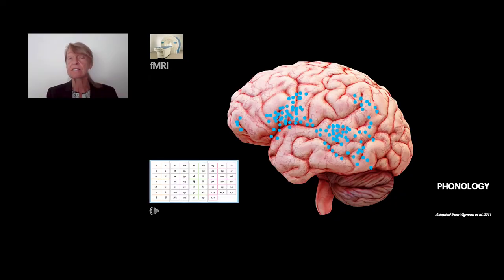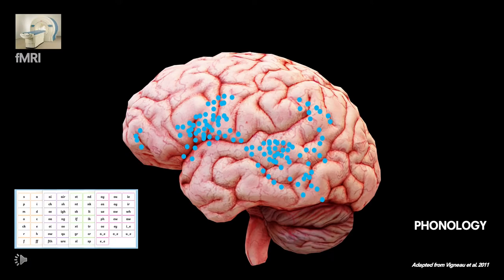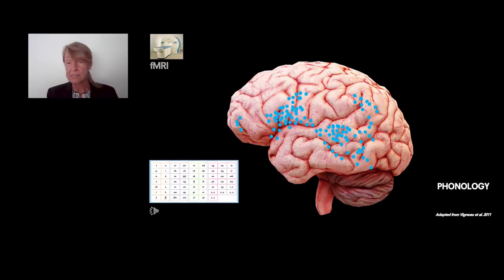Let's start with phonology. What's phonology? It is the sound of languages — vowels, phonemes, syllables — which are the fundamental part of languages. These are processed in the brain in the regions shown here with little dots representing activation: in the frontal region, in the inferior frontal region, posterior temporal, and inferior parietal.